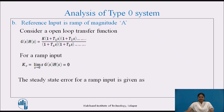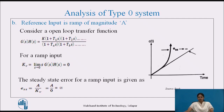The steady state error for ramp input is given as E(S) equal to A divided by Kv. After substituting Kv equal to 0, the steady state error equals infinity. That is, a Type 0 system will not follow the ramp input of any magnitude and will give large error in the output, which may damage the parameters of the system or cause saturation. Hence, ramp input should not be applied to a Type 0 system. The output may take the form as shown in the figure, where the steady state error is infinite.